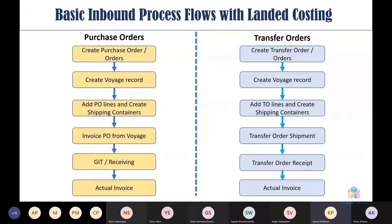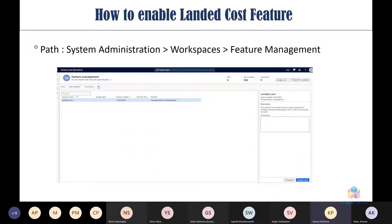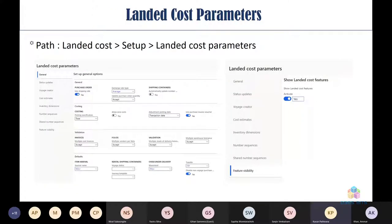To enable the Landed Cost feature, go to Feature Management, search for 'Landed Cost' (it's under Transportation Management), and enable it. Once enabled, a separate Landed Cost module appears in Finance & Operations. Under the Landed Cost parameters, the key setting is 'Show Landed Cost Feature' — activating it makes landed cost features visible across purchase orders, transfer orders, and other forms.